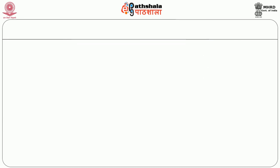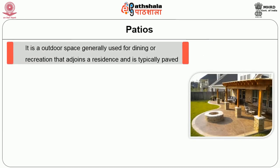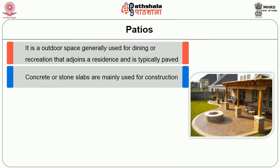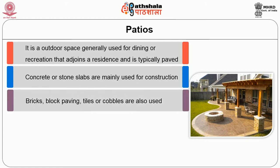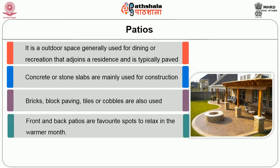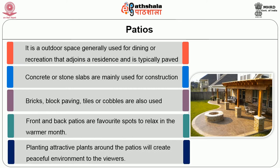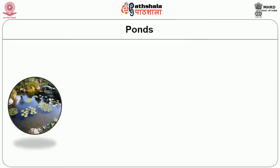The fourth element is patios. A patio is an outdoor space generally used for dining or recreation that adjoins the residence and is typically paved. Concrete or stone slabs are mainly used for construction. Bricks, block paving, tiles or cobbles are also used. Front and back patios are favourite spots to relax in the warmer months. Planting attractive plants around the patio will create a peaceful environment for viewers.